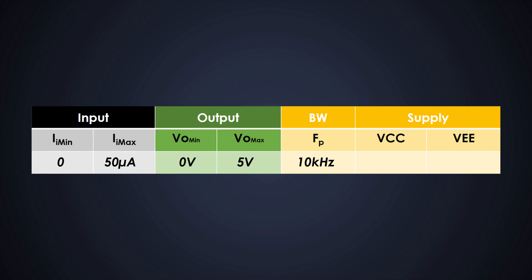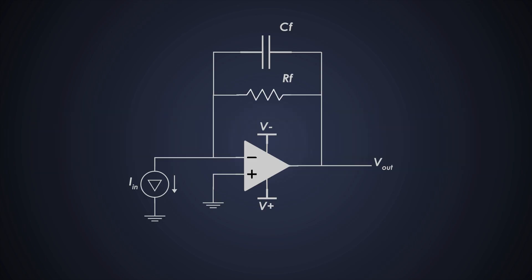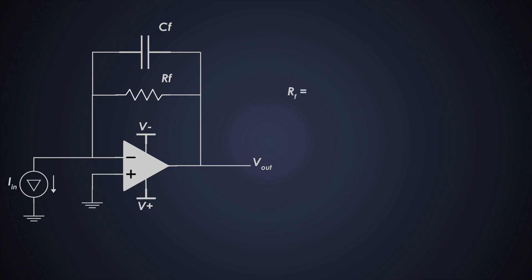For this, we supply 15 volts to VCC and minus 15 volts to VEE. Using the given design goals, we need to convert a maximum current of 50 microamperes to a maximum output voltage of 5 volts.